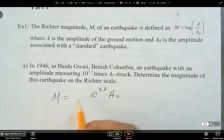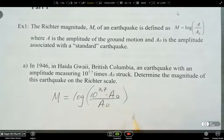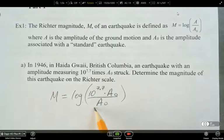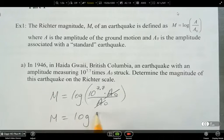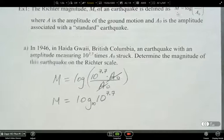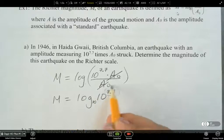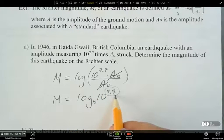So we've got M equals, and then the logarithm of that number, but this is also divided by A naught. So what do you notice is going to happen here? These are going to cancel, and then we're going to have M equals log of 10 to the 7.7. What do we know about logs that have an invisible base?